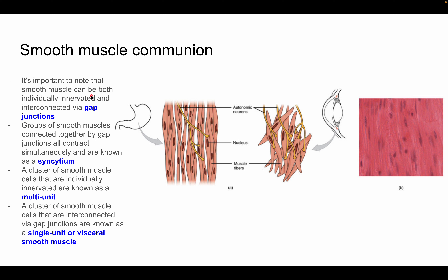Smooth muscle can be both individually innervated and interconnected via gap junctions. When the number of motor axons is less than the number of cells, groups of smooth muscle cells connected by gap junctions all contract simultaneously by spreading the action potential — an electrical depolarization — between cells. This is known as a syncytium. Individually innervated smooth muscle cells would not form a syncytium.